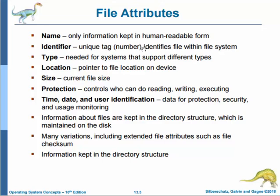A file's attributes vary from one operating system to another but typically consist of the following. A file can contain a name, which is the symbolic file name and is the only information kept in human-readable form. The identifier is a unique tag, usually a number, that identifies the file within the file system. It is a non-human-readable name for the file.